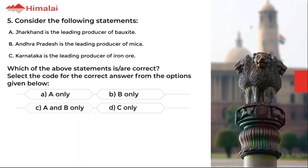Question number 5. Consider the following statements. A. Jharkhand is the leading producer of bauxite. B. Andhra Pradesh is the leading producer of mica. C. Karnataka is the leading producer of iron ore. Which of the above statements is/are correct? Select the code for the correct answer from the options given below. The correct option is B.